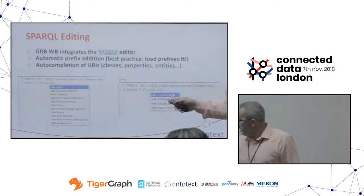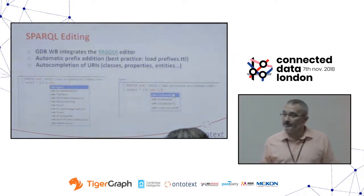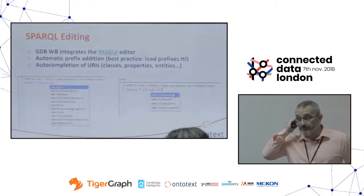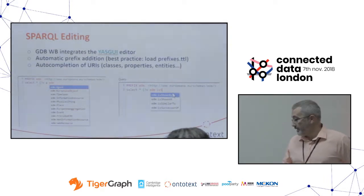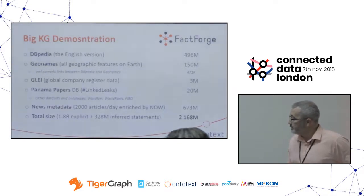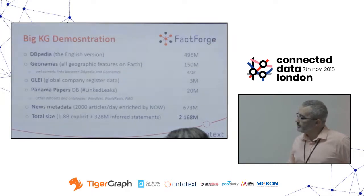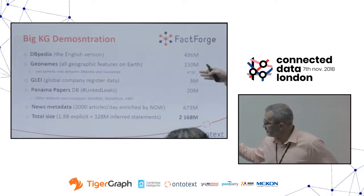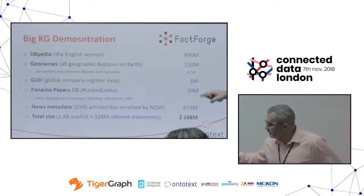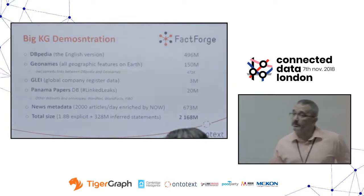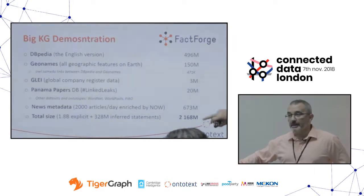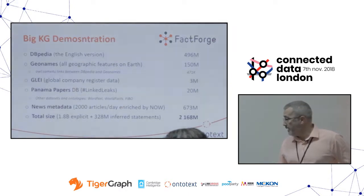It helps if in the SPARQL editor you have auto-suggest, because in a schema where you integrate data from multiple sources you're very likely to have hundreds of classes and properties that most people wouldn't remember easily. For some of the demonstrations I'll use a service called FactForge — it's the English version of DBpedia, plus GeoNames, plus the mappings between them, some company data from different sources, a lot of news metadata — more than a million news articles annotated and linked to this knowledge graph. All together we're speaking of about two billion triples.